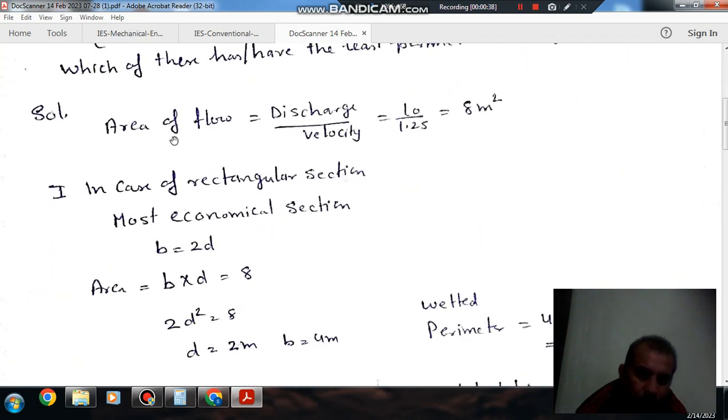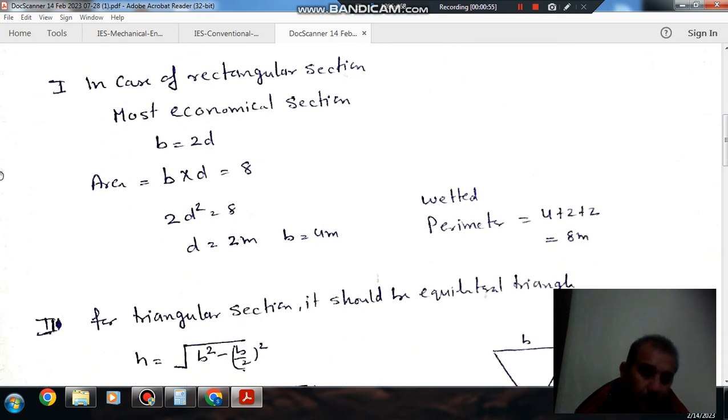Area of flow can be calculated by discharge divided by velocity. Discharge is given as 10 m³/s and velocity is 1.25 m/s. So area of flow is 8 m².